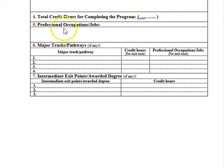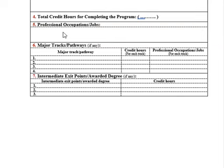The Total Credit Hours for Completing the Program are based on regulations and standards from the Saudi Qualification Framework. If the minimum number of levels for a bachelor degree is 8 and the minimum credit hours per level is 15, then the minimum total is 120 credit hours. If the maximum per level is 18, the maximum total is 144 credit hours.